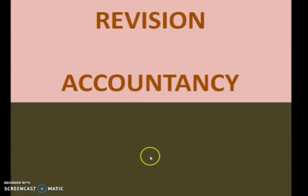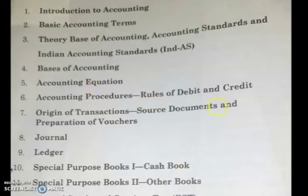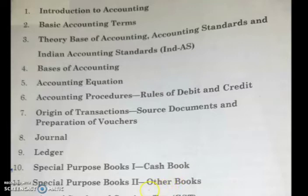Now let us move forward with our revision session. In our earlier classes we discussed introduction to accounting, basic accounting terms, theory base of accounting, basis of accounting, accounting equation, rules of debit and credit, source document, journal, ledger, and special purpose books. Cash book is a very important chapter — you have to cover almost all the topics from it. Other books such as purchase book and sales book are also important and you have to study them well.